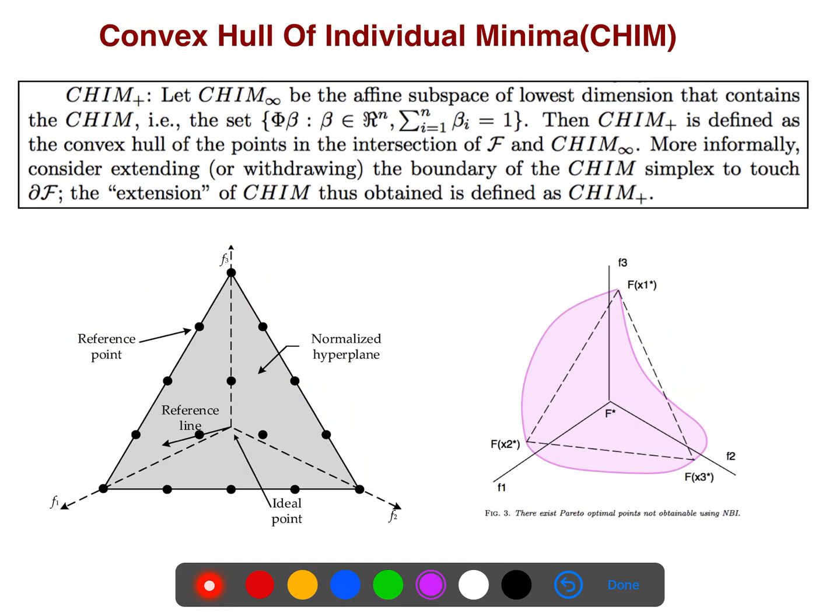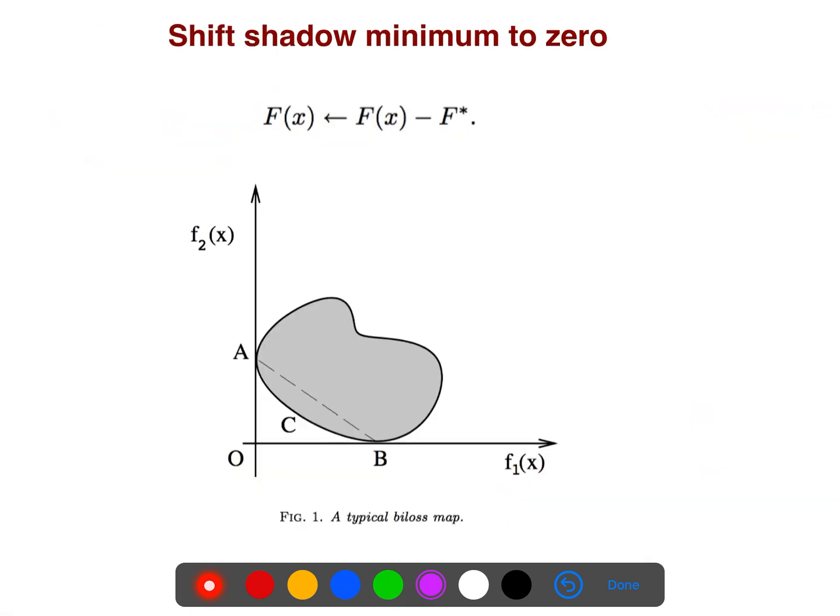The convex hull - we also have CHIM infinity to be the affine subspace of lowest dimension that contains the CHIM. But because CHIM is not an affine subspace, that's why we try to find the lowest, because we need that to understand the direction that is emanating from the CHIM to the origin. The article assumes we can always change the coordinates so that we can simply put the origin at zero, the reference at zero, so that all the calculations are easier. Without loss of generality, we can do this kind of analysis.